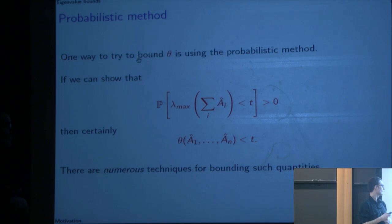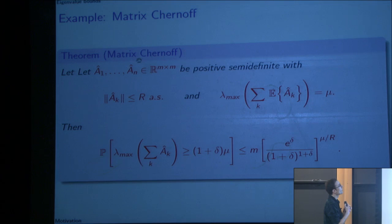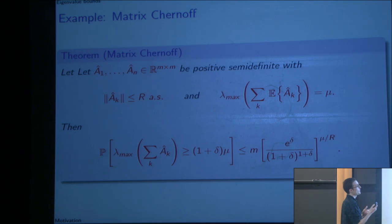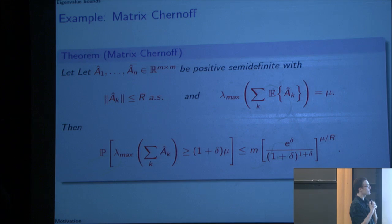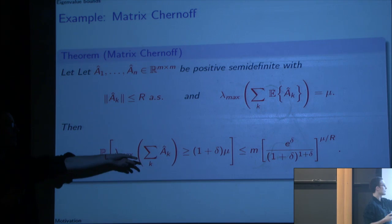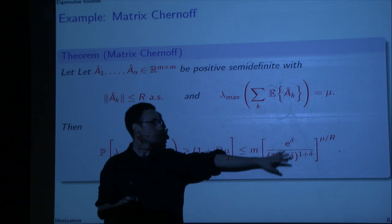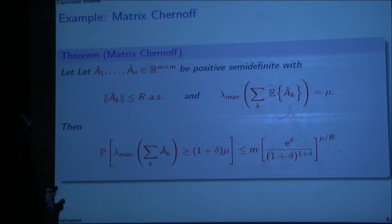There are numerous techniques for bounding such quantities. For example, there's the matrix Chernoff bound. Let A1 through An be positive semi-definite matrices with an upper bound on the operator norm and some known value of the lambda max of the expected sum. What you get is that the probability that lambda max is greater than or equal to some constant times this quantity is less than or equal to m times some function. The fact that this m appears here is going to be really important.